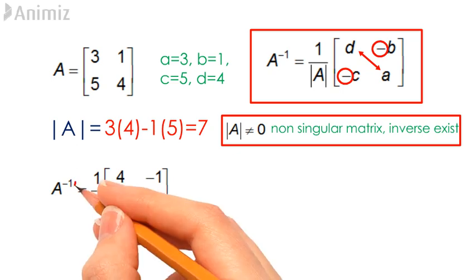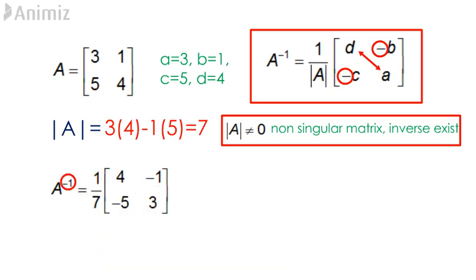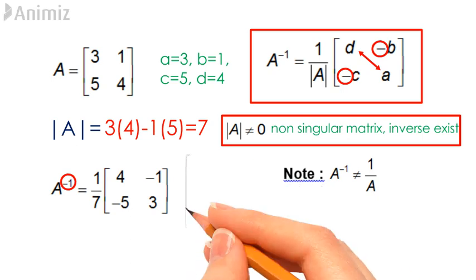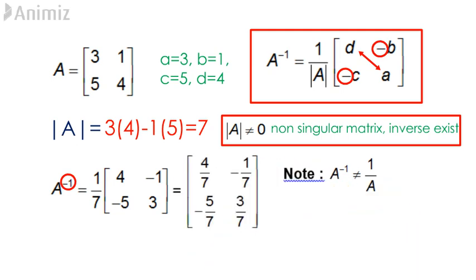A inverse is written as A with the superscript negative 1, and this is not to be confused with 1 over A. Substituting into the formula 1 divided by the determinant of A multiplied by the matrix